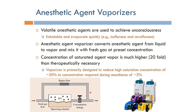This is done by an apparatus that looks like this. We have the anesthetic agents here, and because they evaporate very quickly, the concentration of the anesthetic agent vapor on top will be almost 30%. By passing part of the fresh gas input into the vaporizing chamber and another part through a bypass flow, we control the ratio between the two to get the concentration we need. Vaporizers are primarily designed to reduce this high saturation concentration of nearly 30% down to the concentration required during anesthesia, which is about 2%.